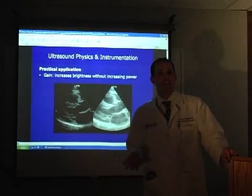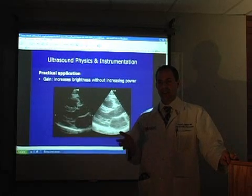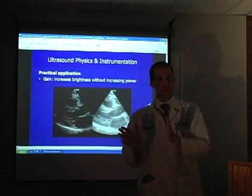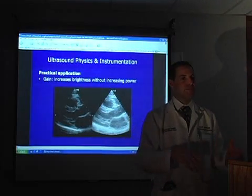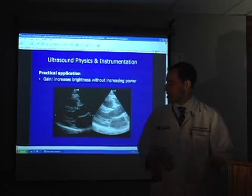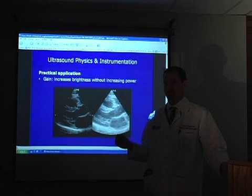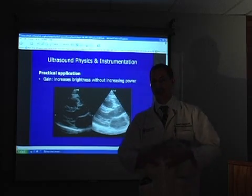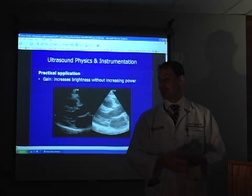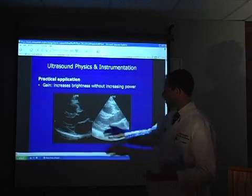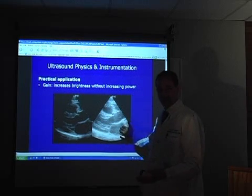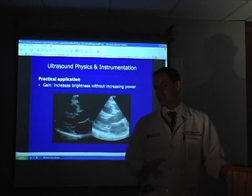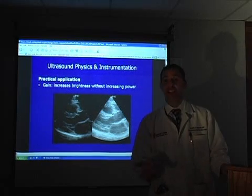Gain adjusts the grayscale — the amount of brightness you see — without changing any of the sound dynamics like power, frequency, or other physics elements. There's usually a knob on the machine for gain. If there's a lot of adiposity or some other scatter or absorption preventing an ideal image, you can adjust the gain. For example, the image on the left may be a little too dark, and a too-bright image is also suboptimal. You want to find the amount of gain that allows you to see what you need, which will differ based on patient characteristics and the target tissue being imaged.